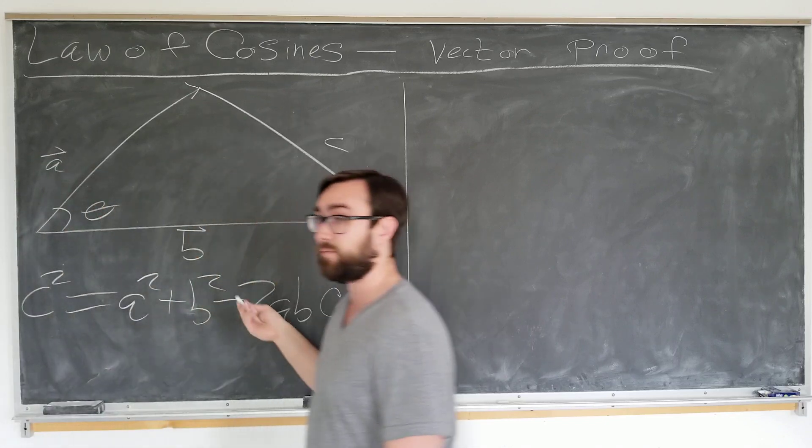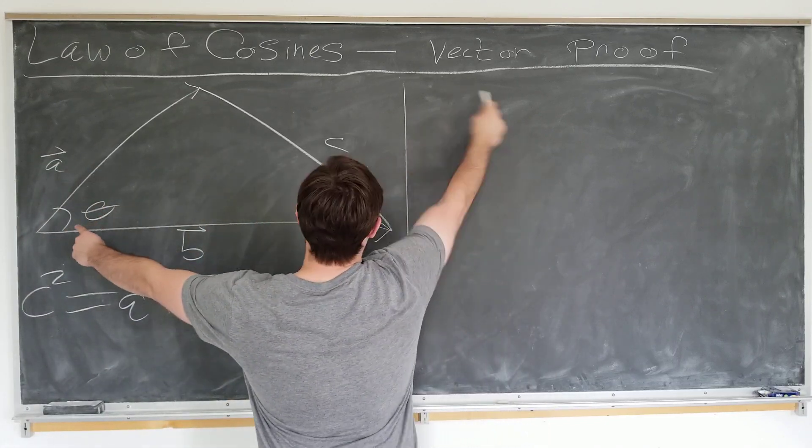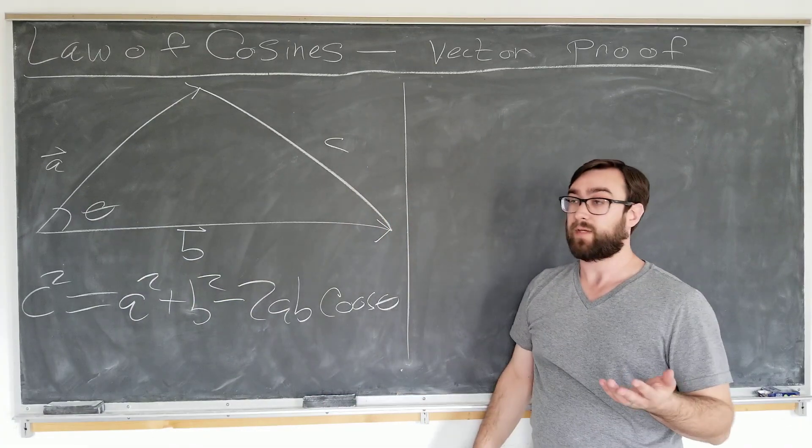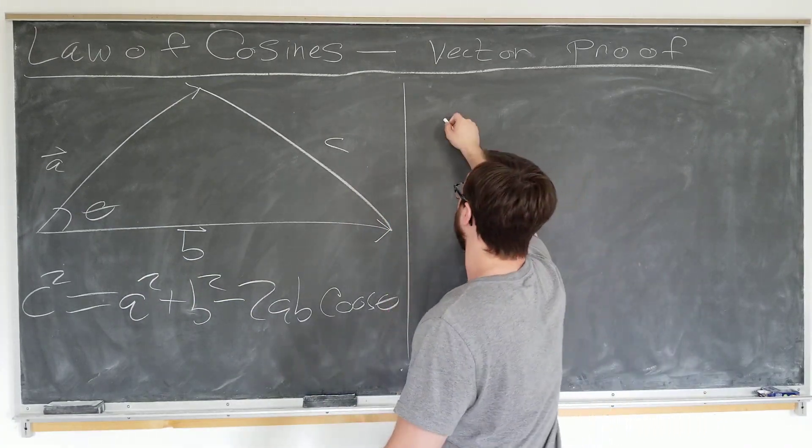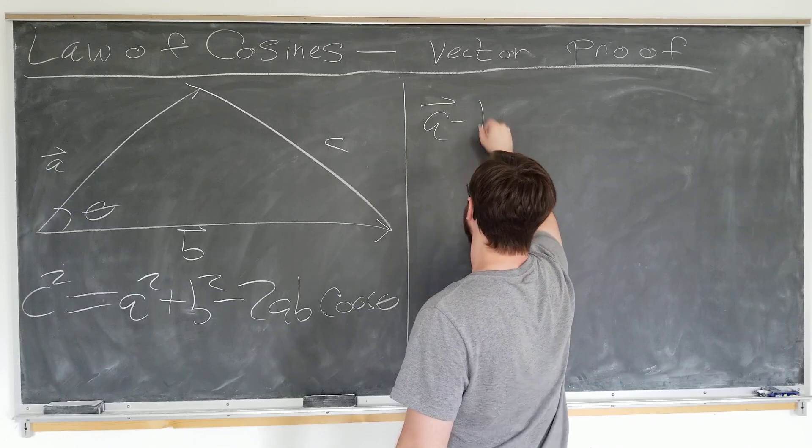Well if we just add a and b, we would get a vector that will be somewhere over here using the ordinary tail-to-tip method, which would not help us. So we'll consider what happens if we subtract a and b.